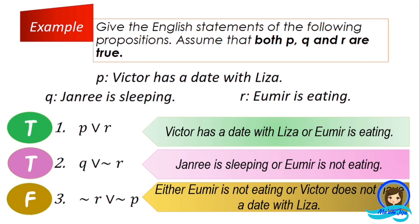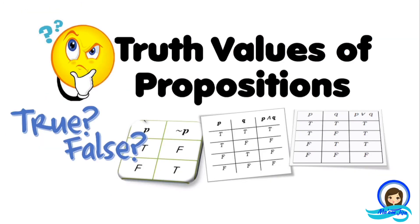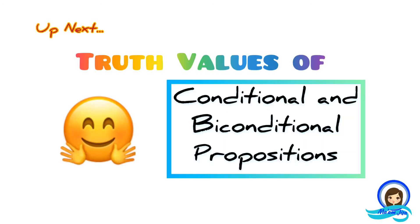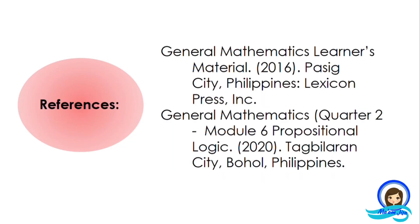That is all about the truth values of propositions, particularly for negation, conjunction, and disjunction. In the next lesson, I will discuss the truth values of conditional and biconditional propositions. See you in the next lesson.